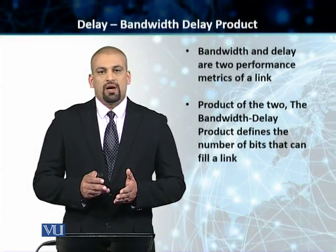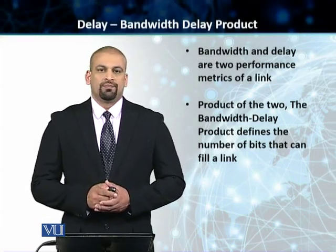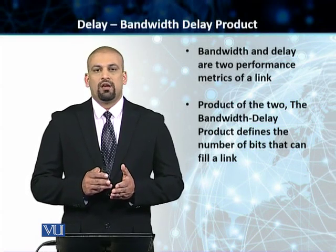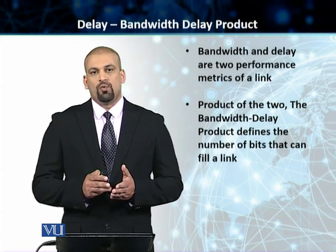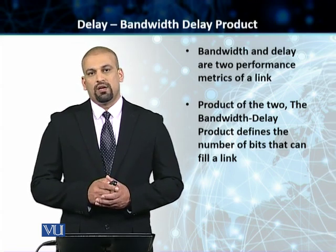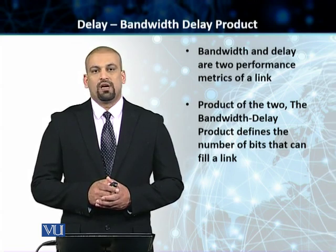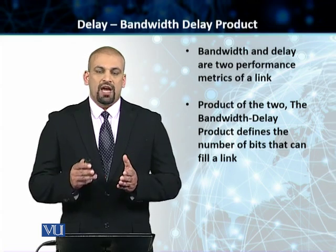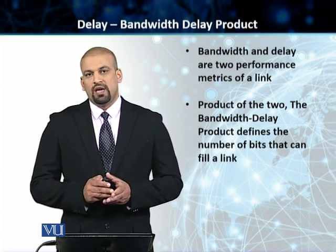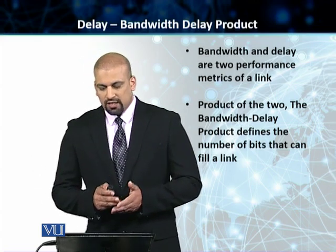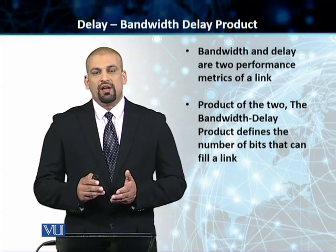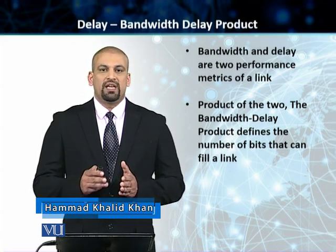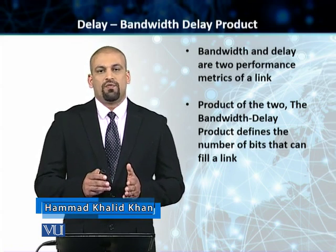Now we will talk about bandwidth delay product. In transmission impairments, there are two factors that are very important to calculate before we can decide the suitability of a medium for data communication. The two factors are bandwidth and delay — two independent factors. The bandwidth delay product, which is the product of these two factors, tells us the number of bits that can fill a full link, giving us the capacity of a given link.